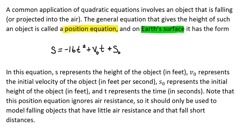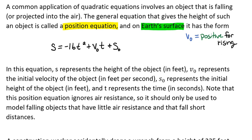In this position equation, the initial velocity, which is our v sub o, is going to be positive if the object is rising and negative when the object is falling. So v sub o is positive for rising objects, and v naught is negative for falling objects.